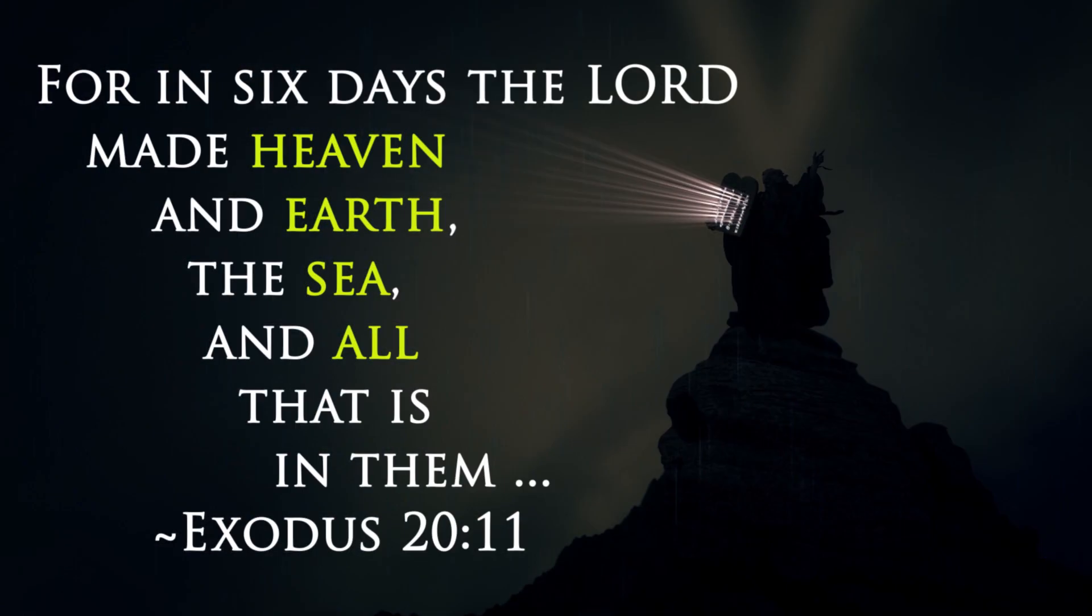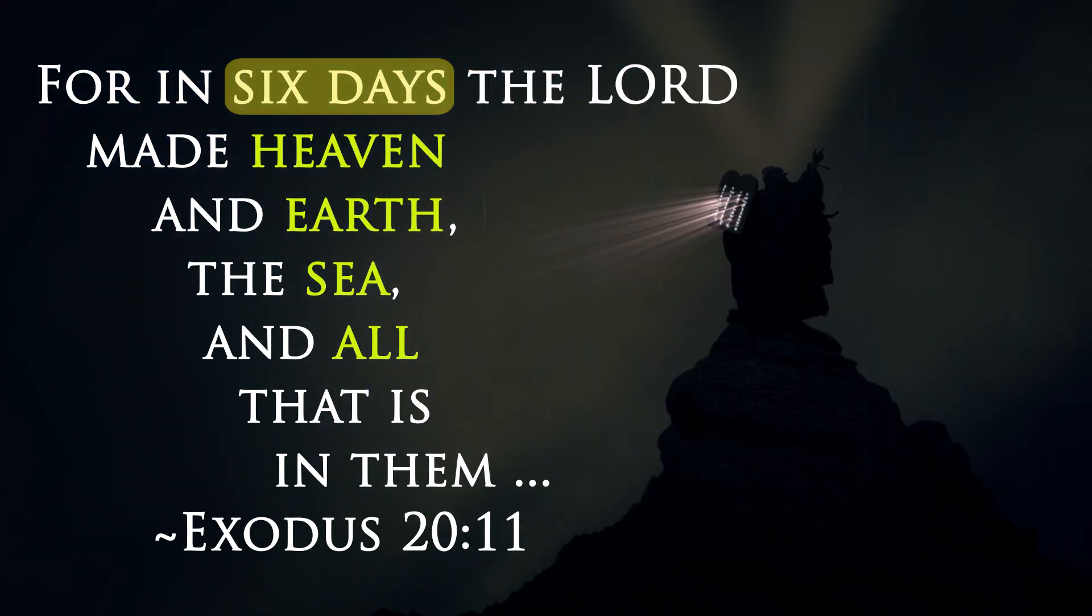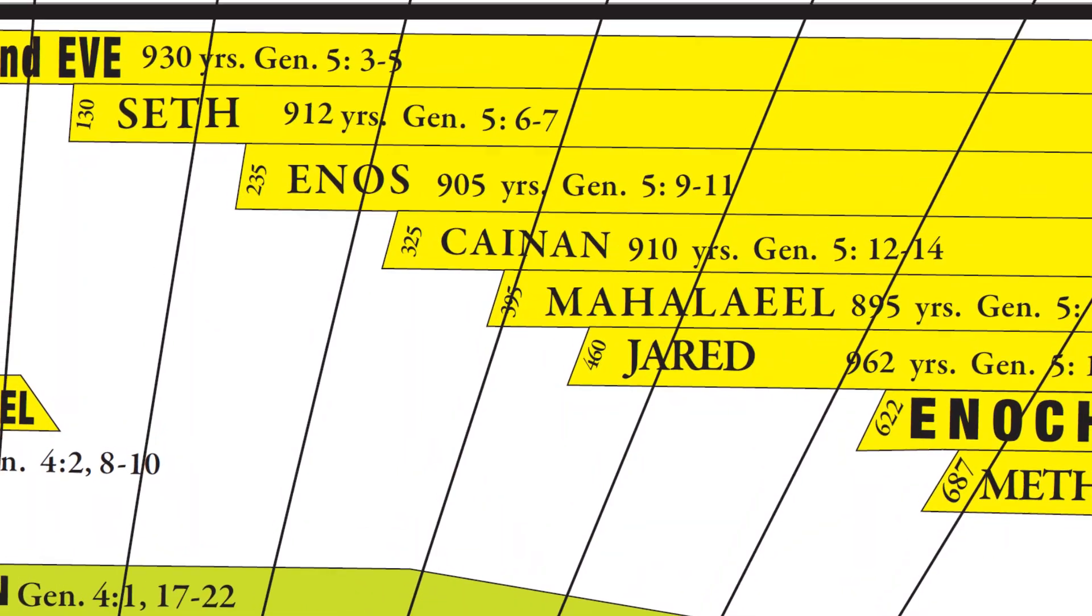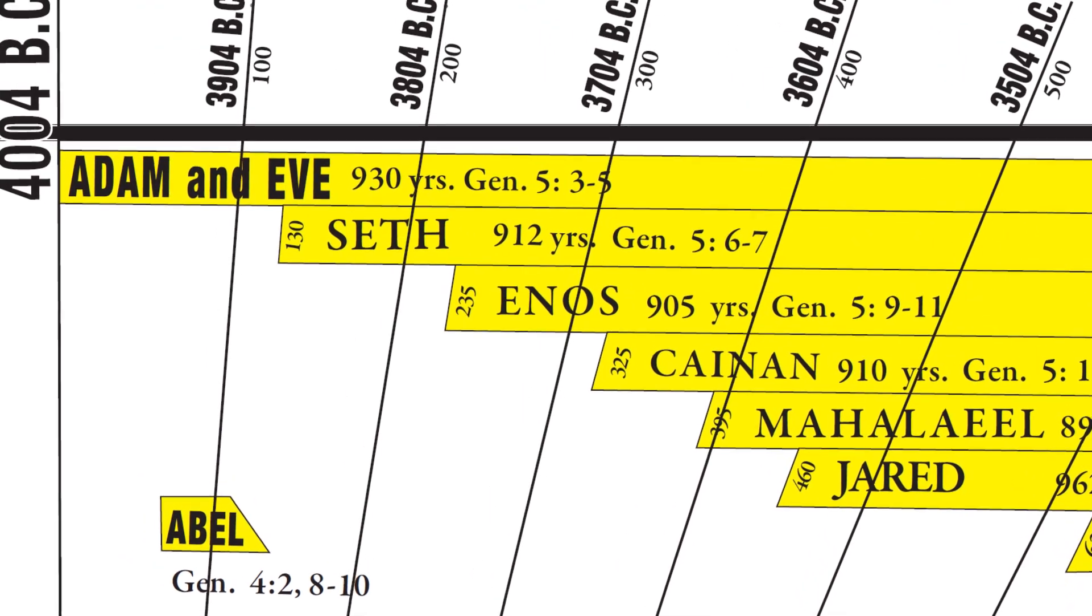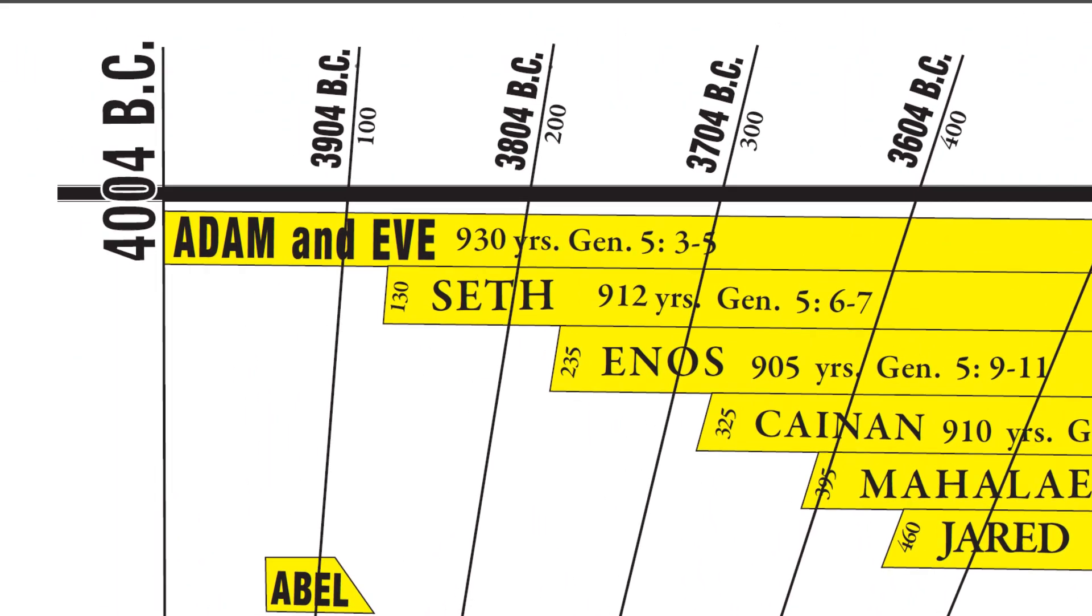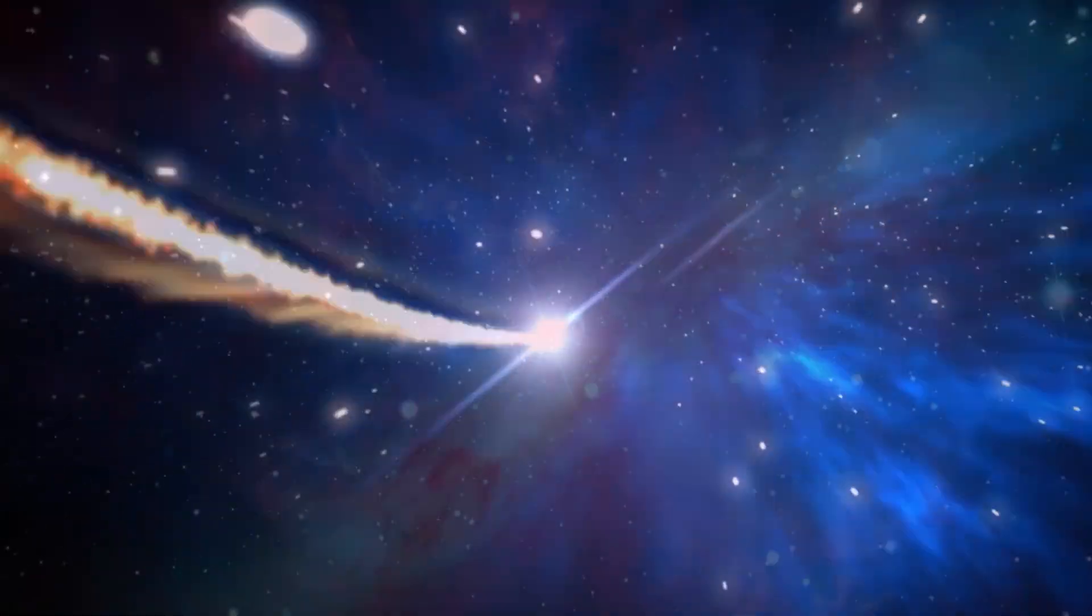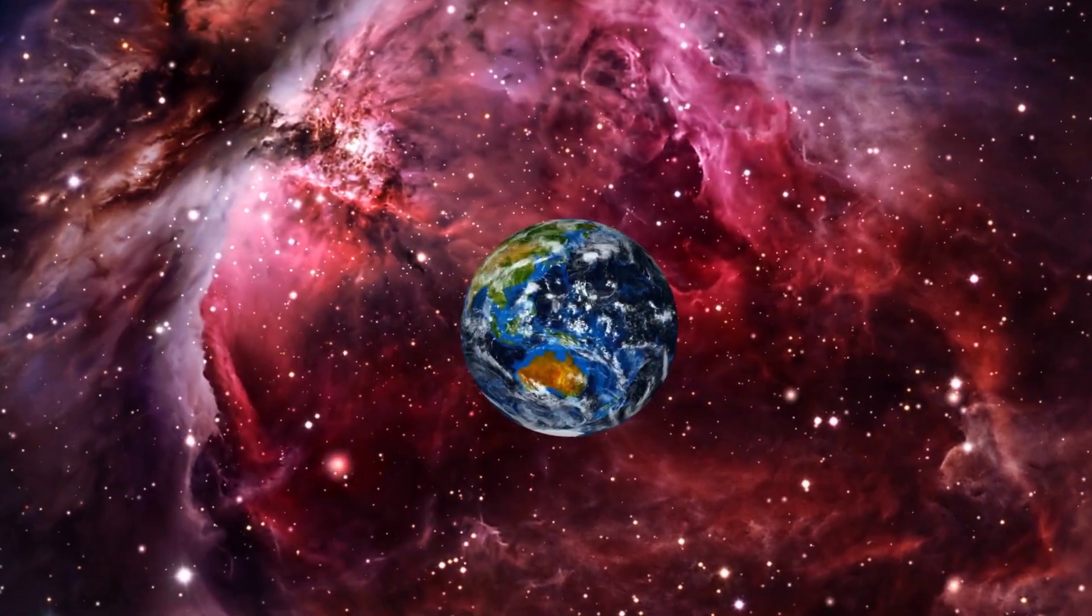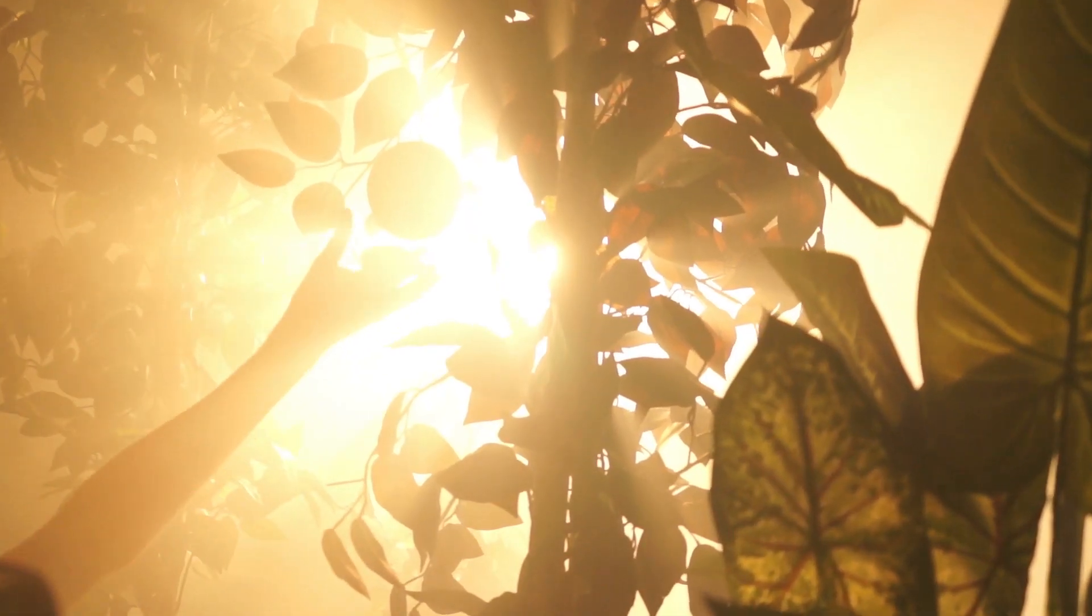God wrote in the Ten Commandments that He created the heavens and the earth, the sea and all that is in them in just six ordinary days. The genealogies in Genesis connect the lives of the early patriarchs straight back to Adam just thousands of years ago. So, how can we see the light from distant stars when it supposedly took billions of years for their light to travel to earth? Does this disprove the clear timeline in the Bible and show the rest of it as just myth?